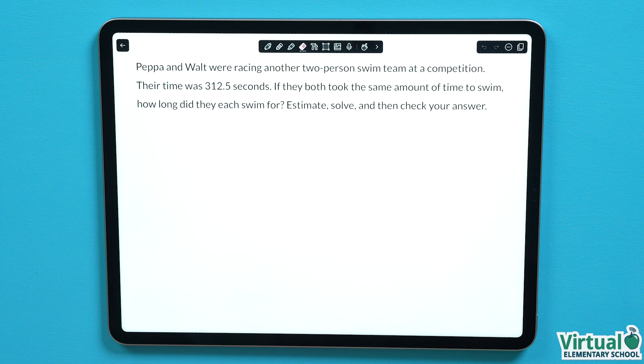Our question says, Peppa and Walt were racing another two-person swim team at a competition. Their time was 312.5 seconds. If they both took the same amount of time to swim, how long did they each swim for?